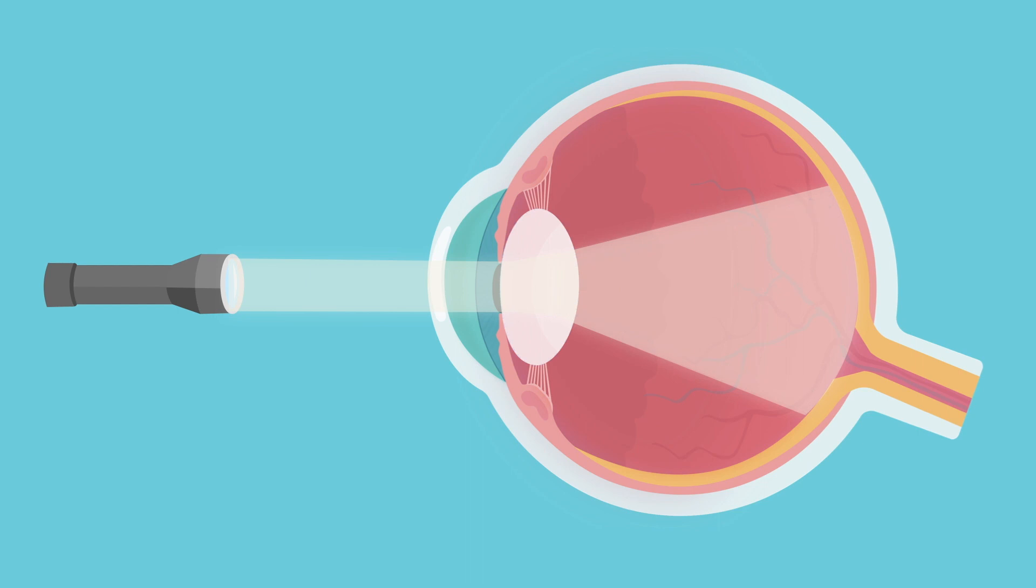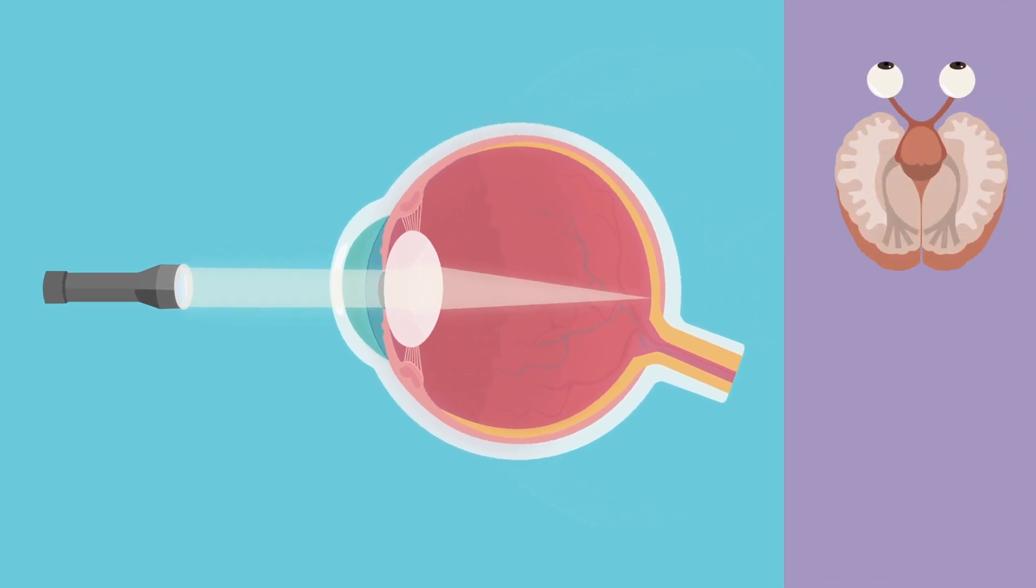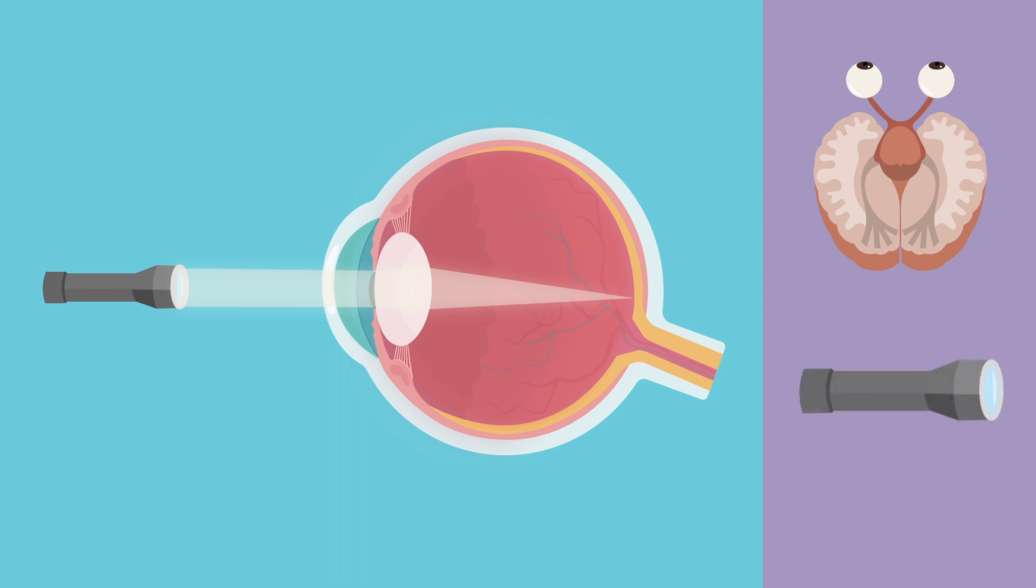When all the light rays reflected from a single point are refracted perfectly in a way that they converge to a single point in our retina, our brain understands that this object is located in a single point in space, and we experience it as a crisp, sharp vision.